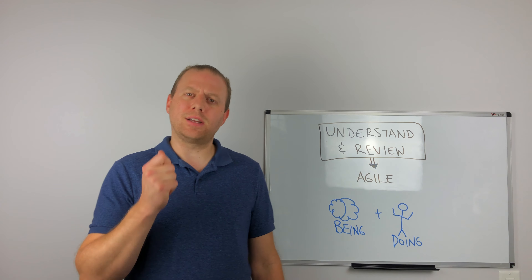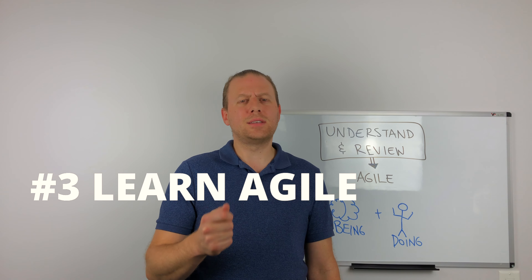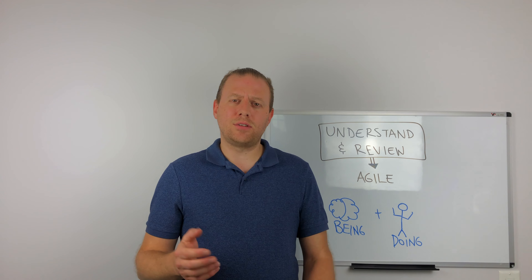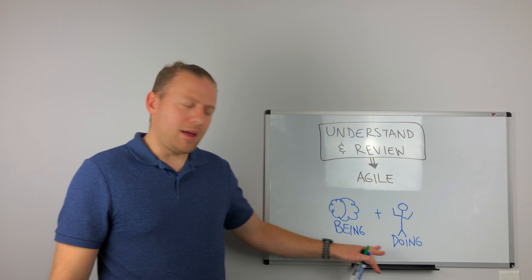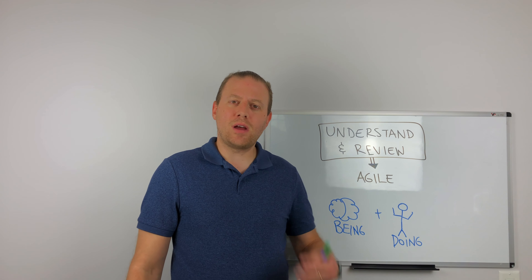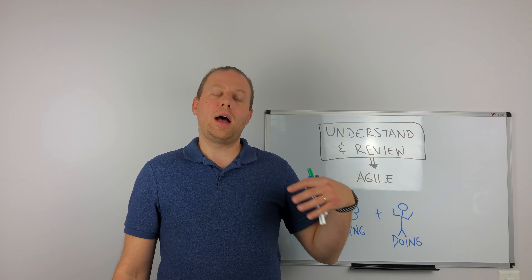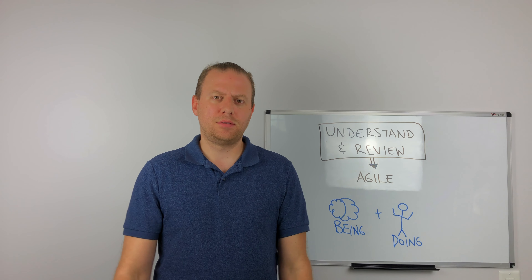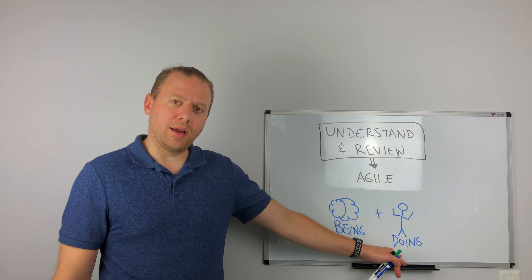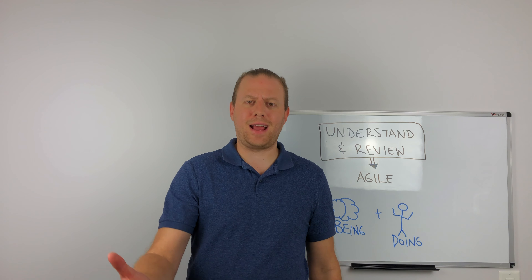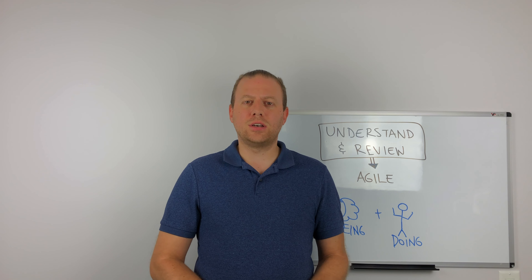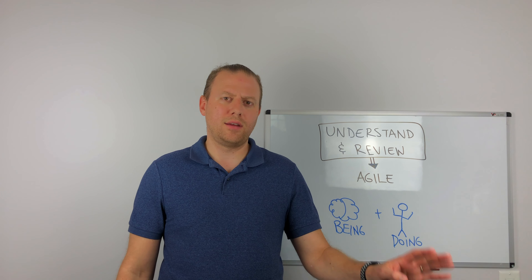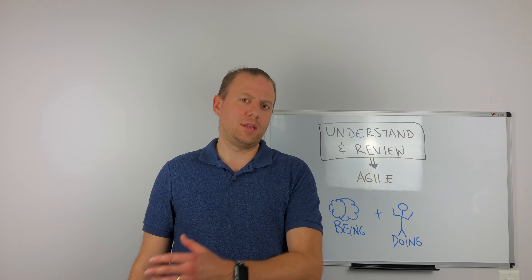The second step in starting Agile Right is to identify and come up with your outcomes. You have a vision — an idea of where you want to go and what it will look like. What outcomes do you want to achieve along the way to know that you're actually hitting that vision? Again, communication is key. Have lots of conversations and set up opportunities to challenge what those outcomes are and if they are worth achieving.